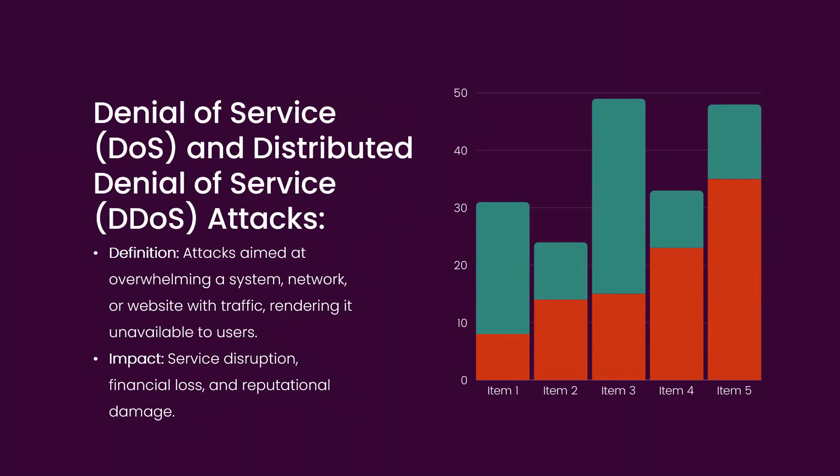6. Denial of Service (DoS) and Distributed Denial of Service (DDoS) Attacks. Definition: Attacks aimed at overwhelming a system, network, or website with traffic, rendering it unavailable to users. Impact: Service disruption, financial loss, and reputational damage.